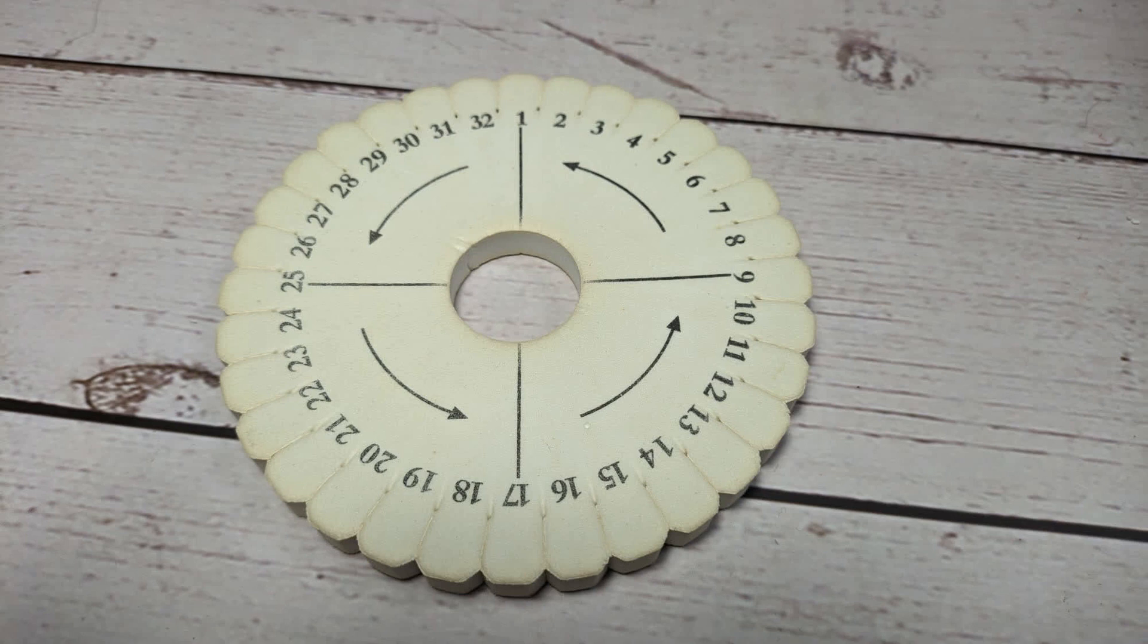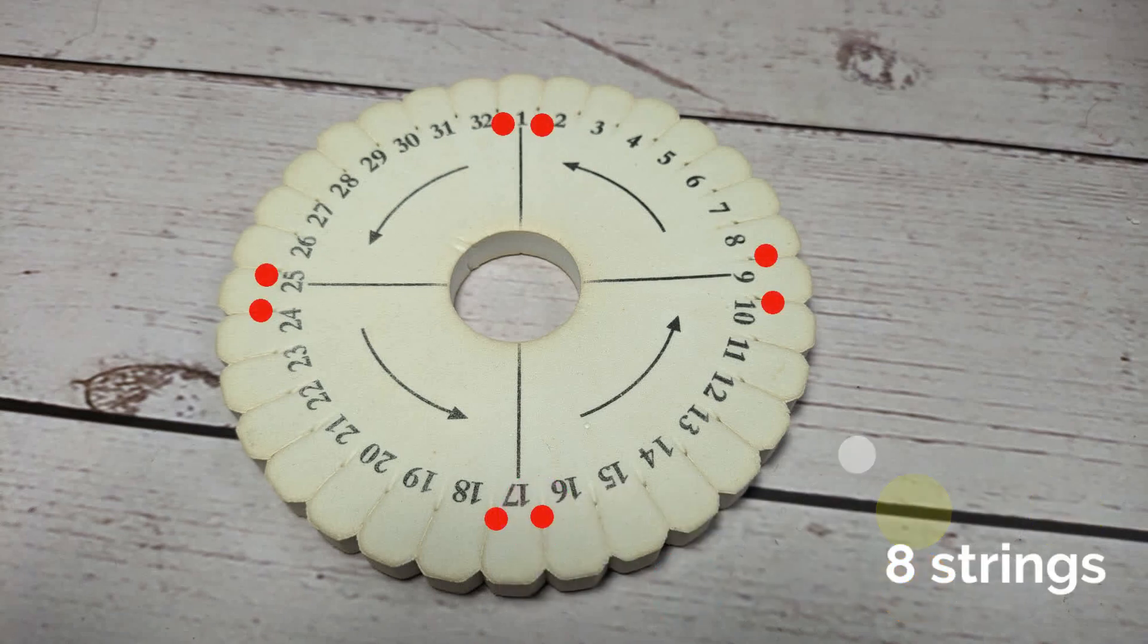So next comes actually putting the string onto the Kumi disk itself. This is going to depend on the number of strings that you have. The fewest number of strings you can have is eight. So that's going to look like this. They're just going to be up in the top, bottom, left and right. And that is how you're going to start it.